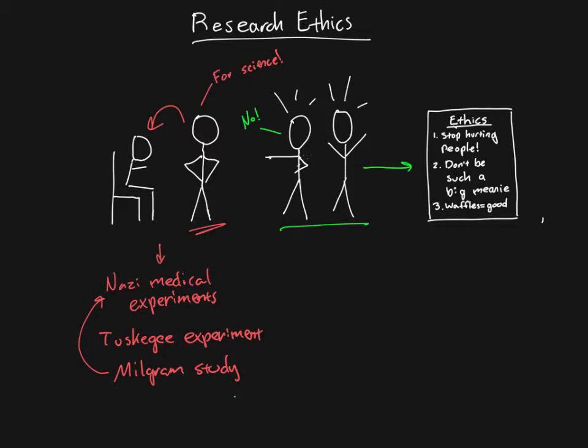We could go on all day talking about these different examples, but the point is that through time, a lot of different people were doing research in questionable ways, spanning from Milgram — where it's very debatable — to something that is outright horrific, like the Nazi medical experiments.